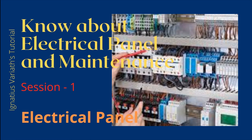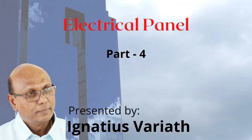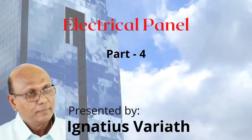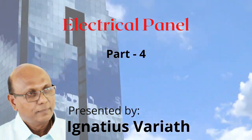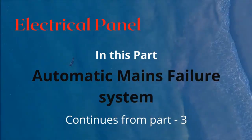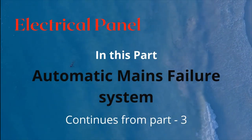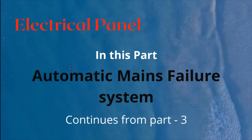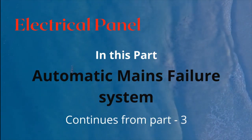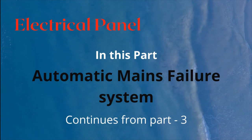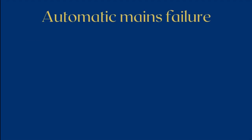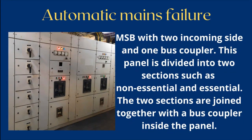Welcome to the tutorial on electrical panel and maintenance — electrical panel part 4, continuing from part 3. This part covers the automatic mains failure system for an MSB with two incoming sides and one bus coupler.